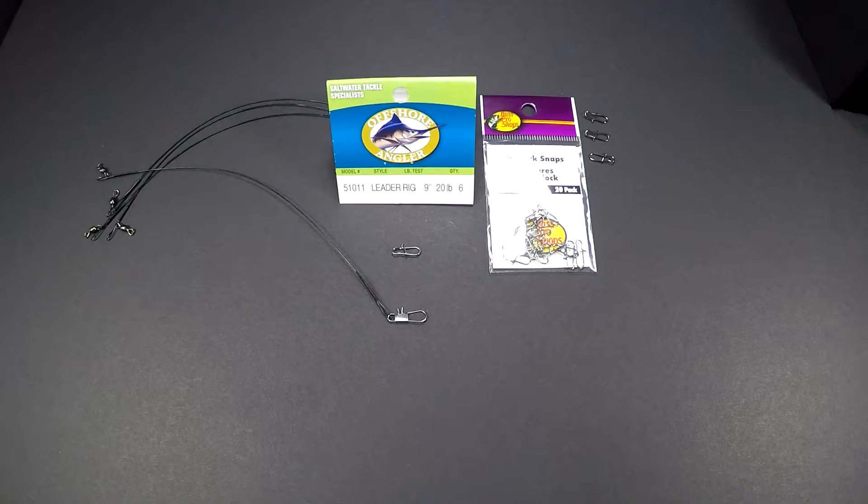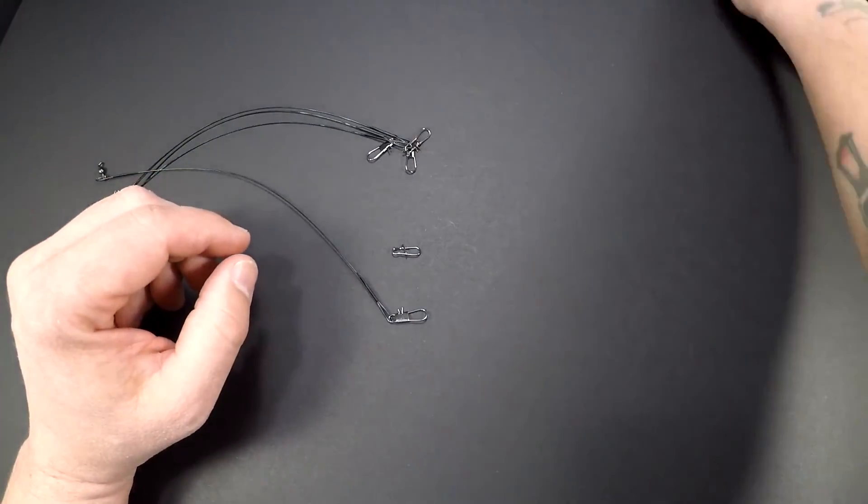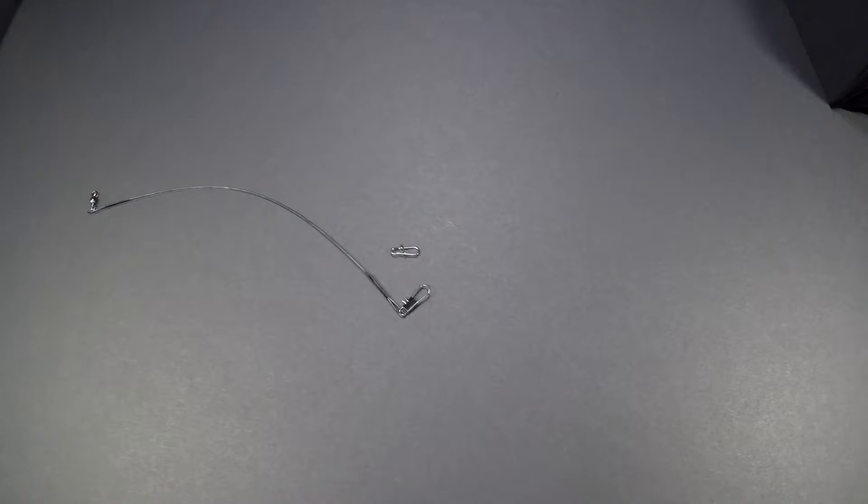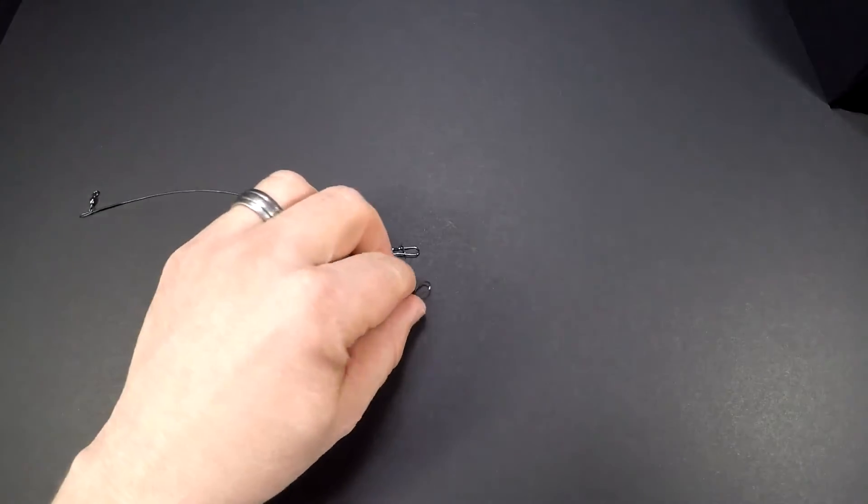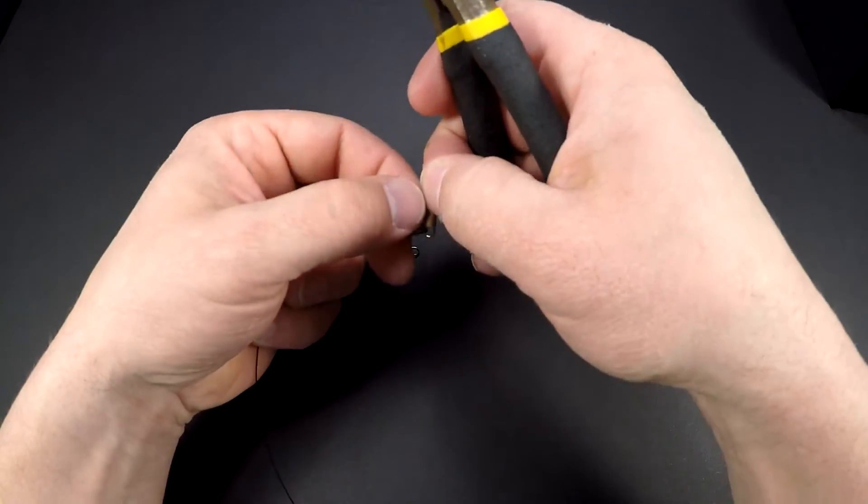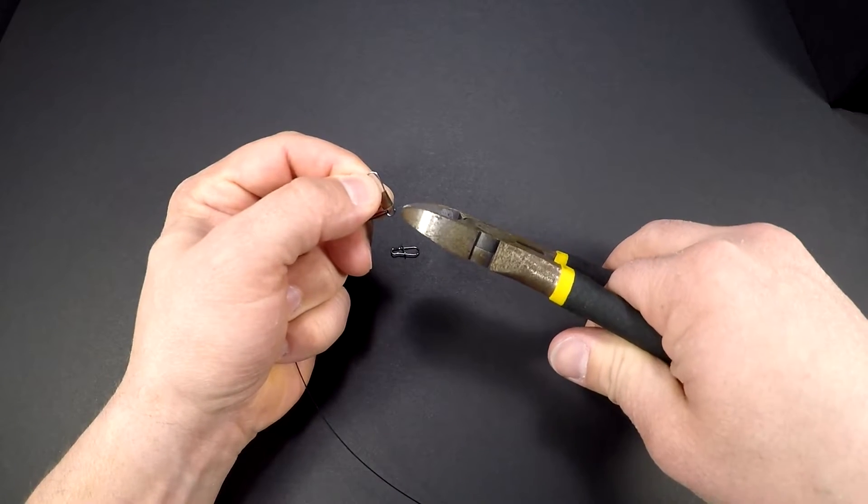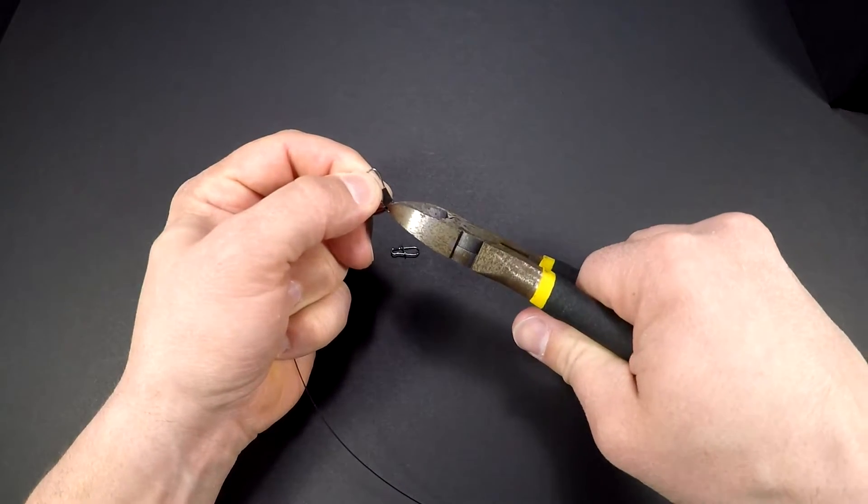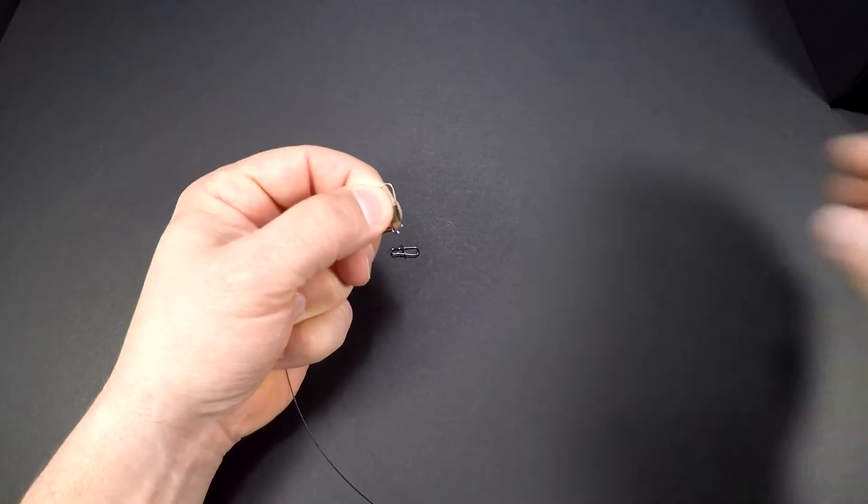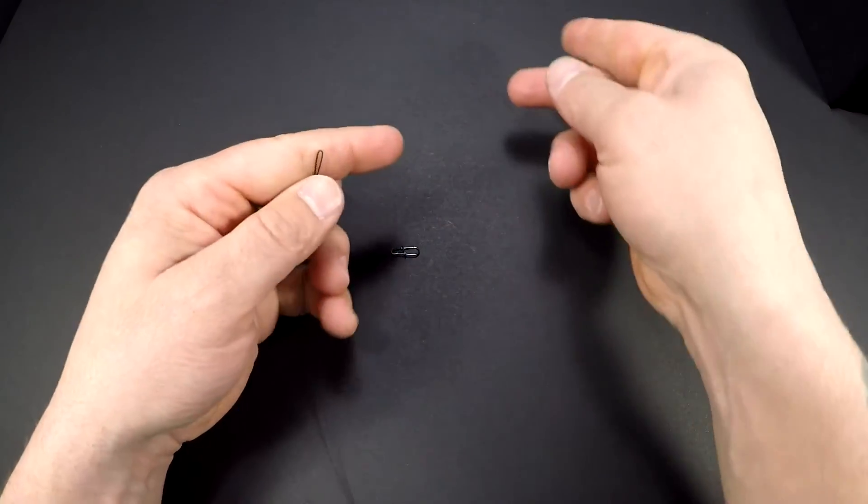Now let's move some of this stuff out of the way so we can focus on changing the snap out. First thing you're going to do is cut your interlock snap off down at the bottom here, and just throw that away.